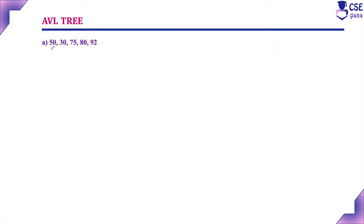What do you mean by AVL tree? AVL tree is a height balanced binary search tree. Whenever you are performing insertion, every element while inserting into a tree, you have to check the balance factor for each node. If the balance factor is 0, +1, or -1, the tree is balanced. If it is +2 or -2, the tree is unbalanced. In that case, you have to implement a rotation to convert the unbalanced binary search tree into a balanced one — then only it becomes an AVL tree.